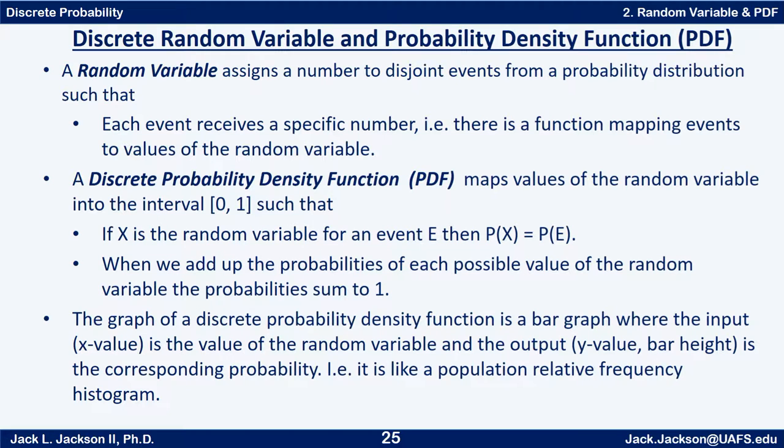A random variable assigns a number to disjoint events from a probability distribution such that each event receives a specific number. In other words, there's a function mapping events to values of the random variable. A discrete probability density function (PDF) maps values of the random variable into the interval [0,1] such that if X is a random variable for an event, then P(X) is the probability of that event.